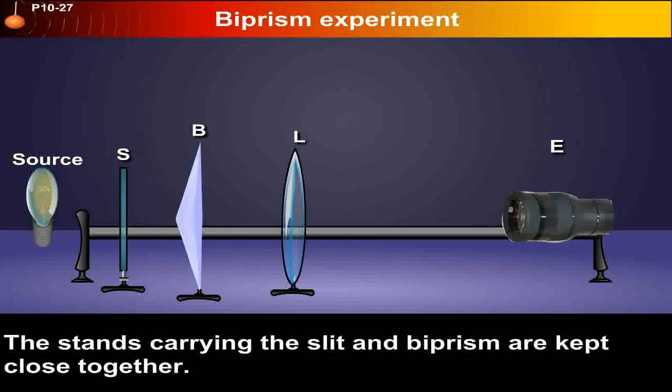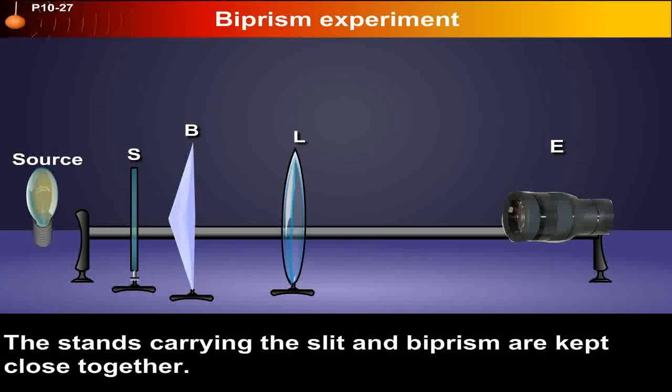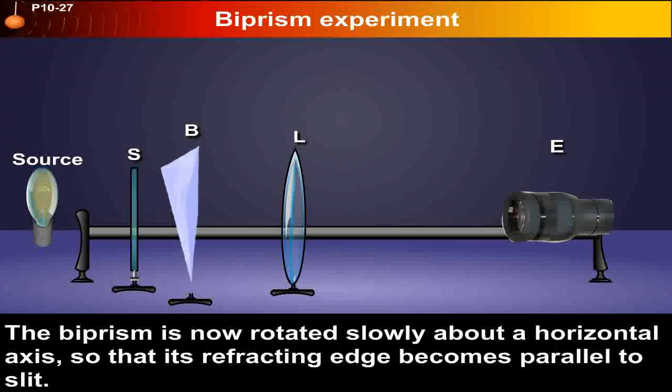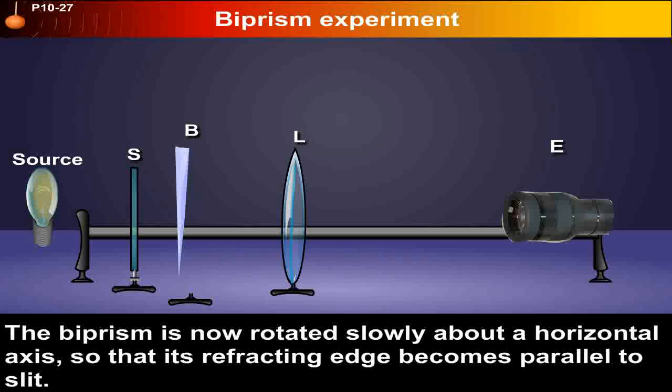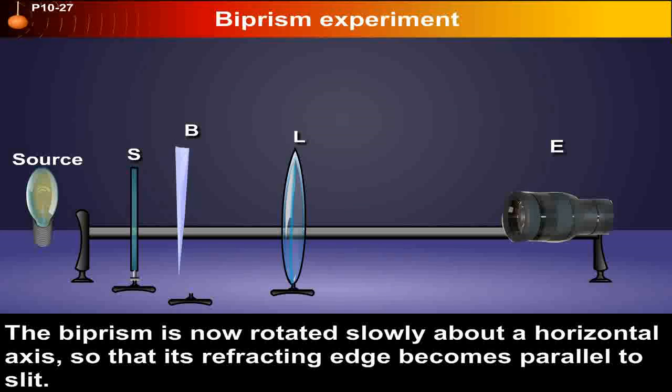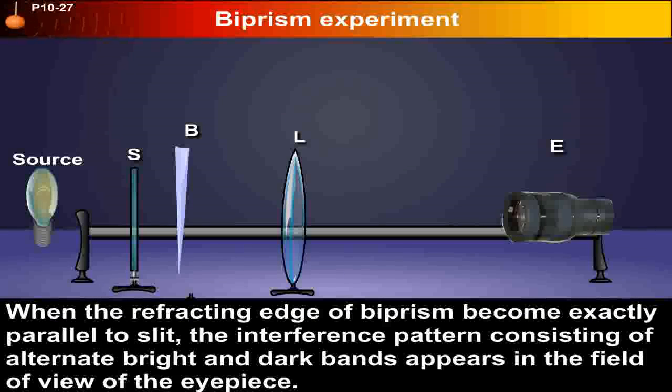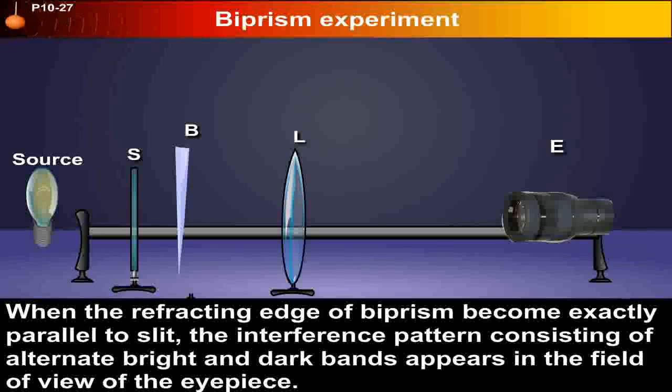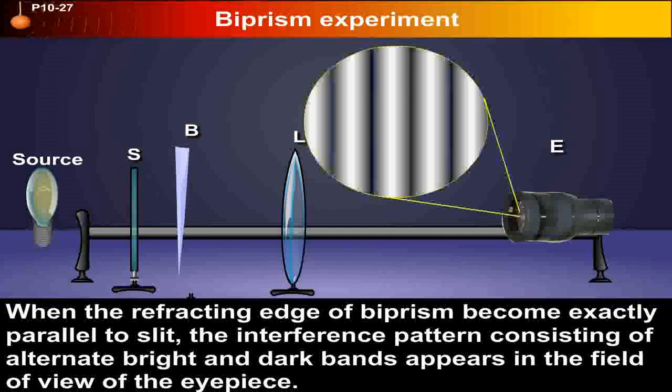The stands carrying the slit and bi-prism are kept close together. The slit is kept vertical. The bi-prism is now rotated slowly about a horizontal axis so that its refracting edge becomes parallel to the slit. When the refracting edge of the bi-prism becomes exactly parallel to the slit, the interference pattern consisting of alternate bright and dark bands appears in the field of view of the eyepiece.